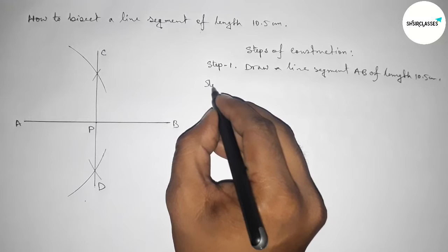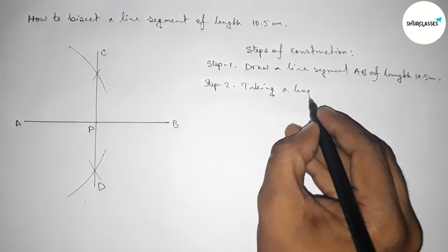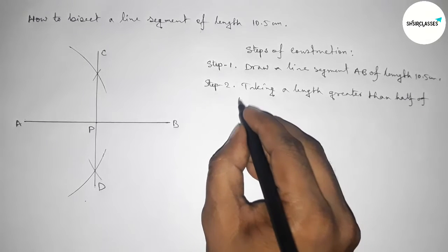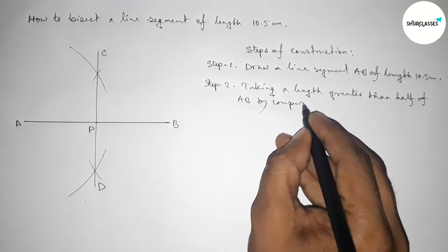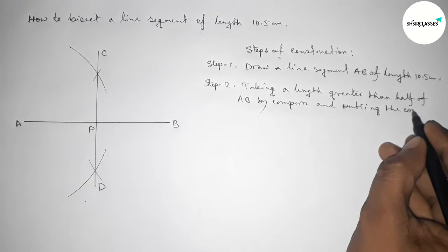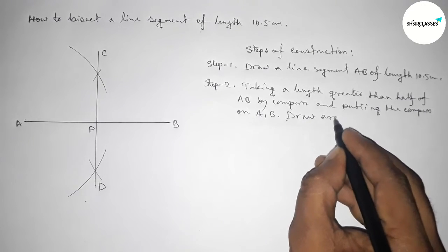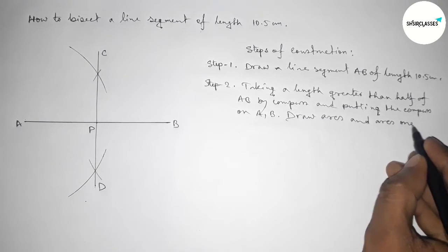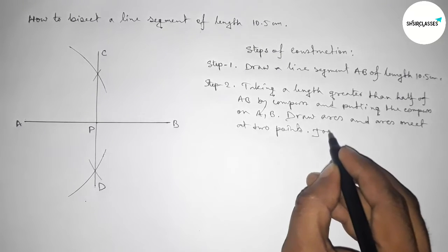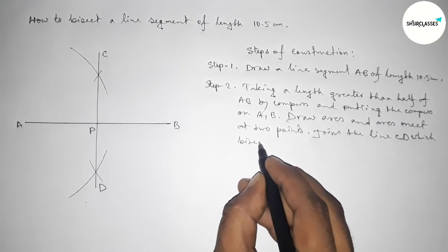In step two we have to take a length greater than half of AB by using compass, and putting the compass on points A and B, draw arcs. The arcs meet at two points. Now join the line CD which bisects the line AB at point P.